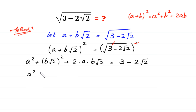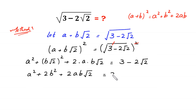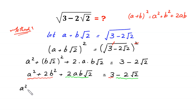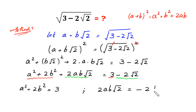Next, (b√2)² equals 2b², so we have a² + 2b² + 2ab√2 = 3 − 2√2. We equate rational and irrational parts: a² + 2b² = 3, and 2ab√2 = −2√2.